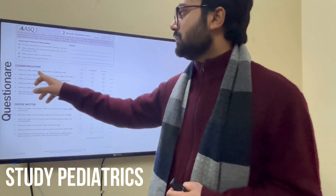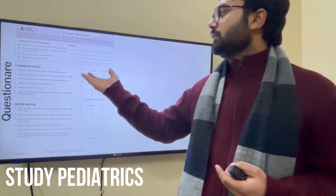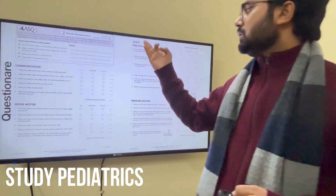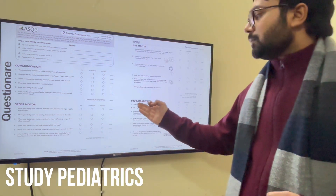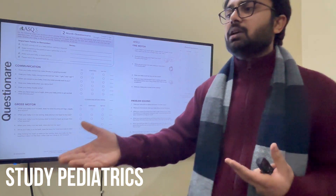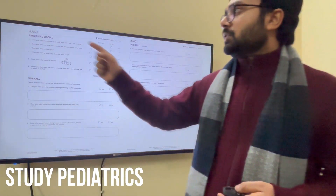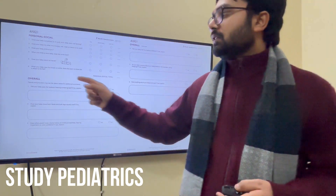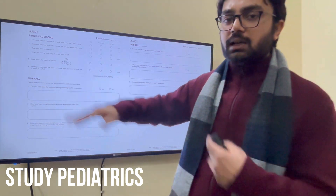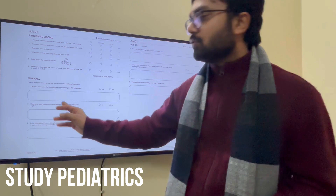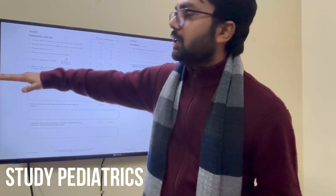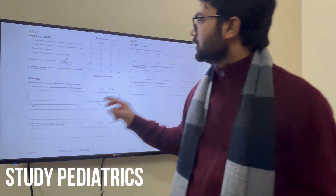The questionnaire has 6 major domains: communication, gross motor, fine motor, problem solving, personal-social, and others — each domain has 6 questions. Each question has 3 answers: yes, sometimes, or not yet. If the answer is yes, we give 10 marks; if sometimes, 5 marks; if not yet, 0 marks. We label the child according to the total marks. The overall section covers follow-up items such as whether the child has passed a hearing screening test or moves both hands together. Our main domain questions end there, and then the overall part comes in the questionnaire.